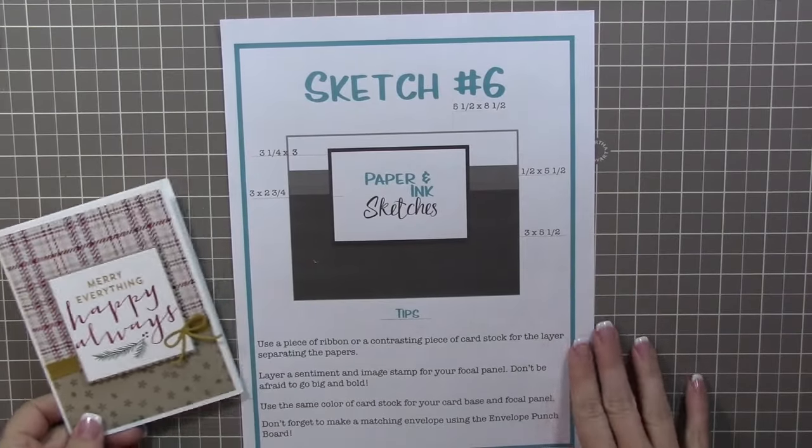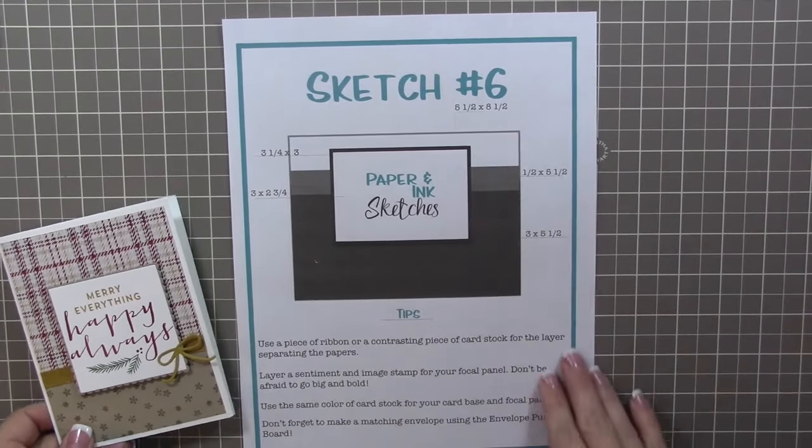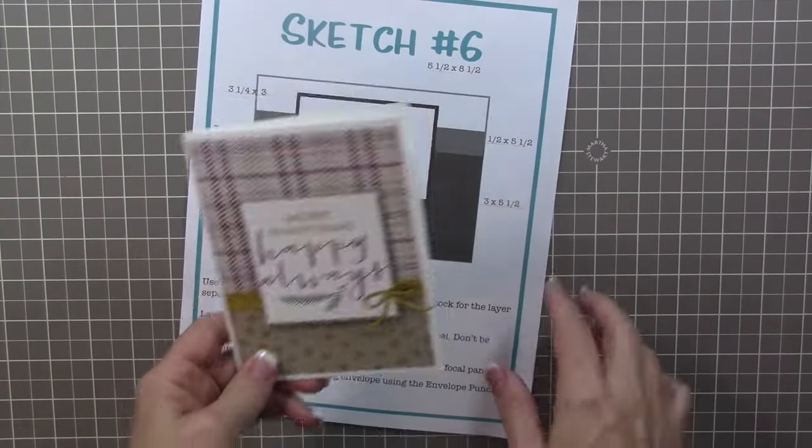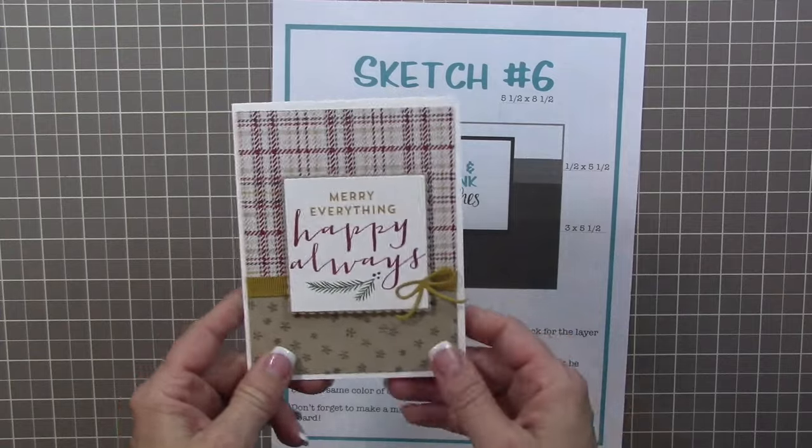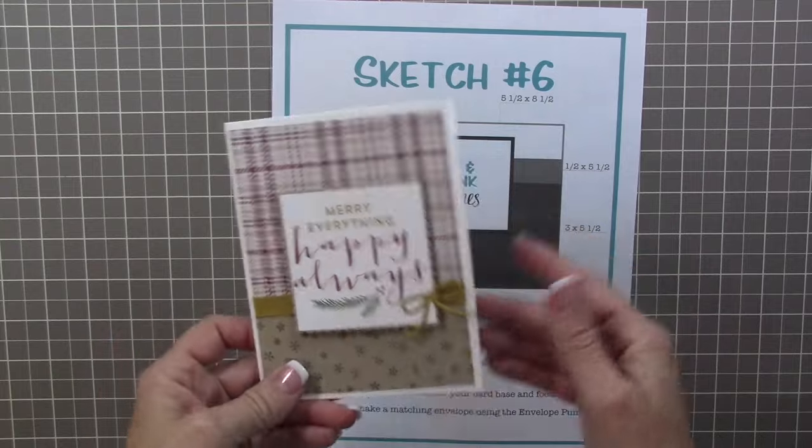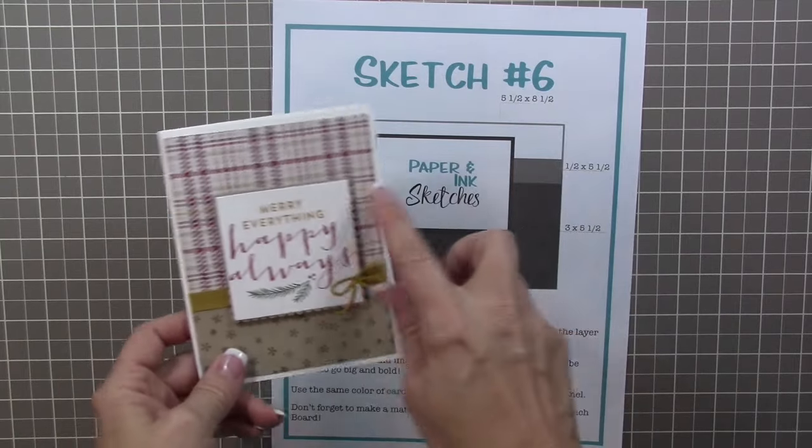Hey guys, it's Kara from iStampen.com. Thanks for joining me for another one of my paper and ink sketches. Today we are working on sketch six and you'll be able to download all the information. You can find the information on my blog or in the description box.